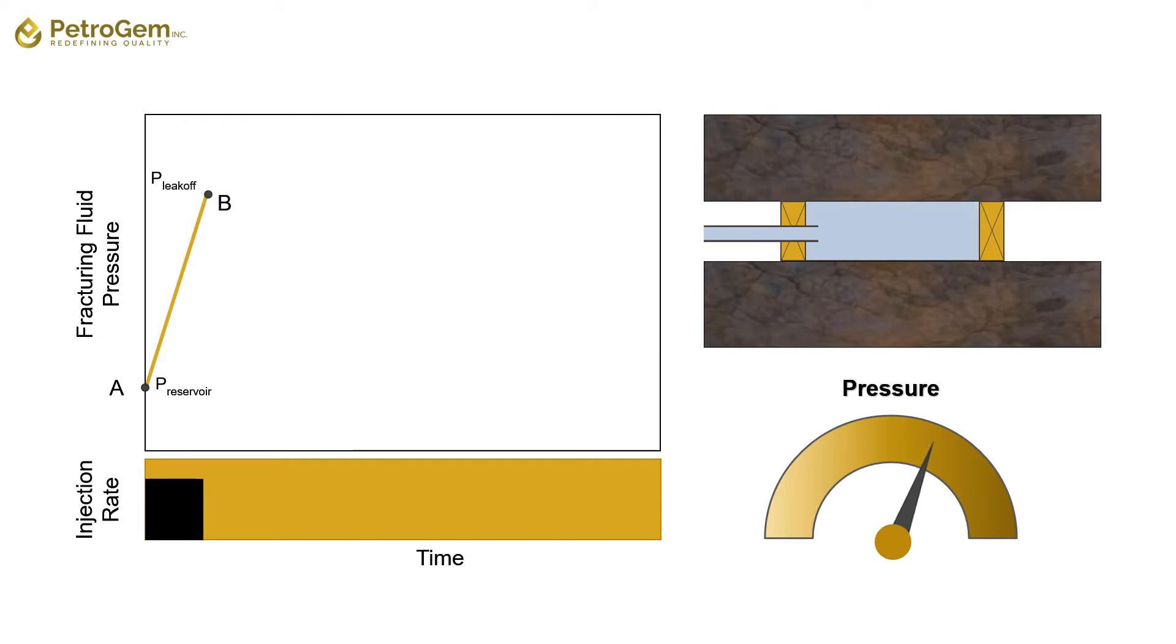The rate of pressure increase, which is the slope of the line AB, depends on different parameters, mainly the compressibility of fracturing fluid and the rigidity of the container, which is the well. This means you can inject a larger volume of a more compressible fluid in a more deformable container and observe less increase in pressure.